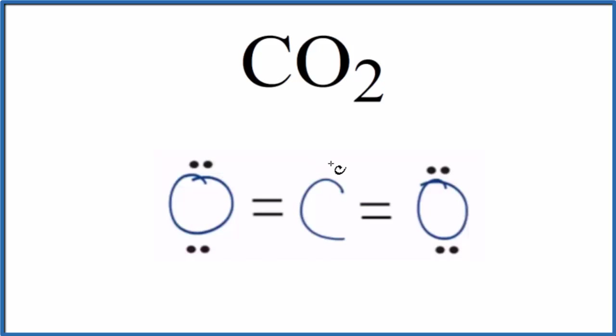If we had a lone pair of electrons here on the carbon, that would affect the molecular geometry—it would push the oxygens down and change the molecular geometry. But since there are no lone pairs here and we only have two atoms, molecular geometry is considered linear. The electron geometry is linear as well. There are no lone pairs on the carbon, so the electron and molecular geometry for CO2 are the same.